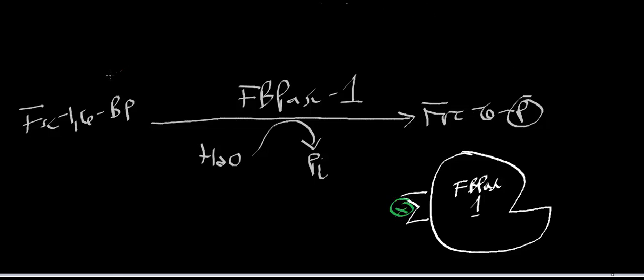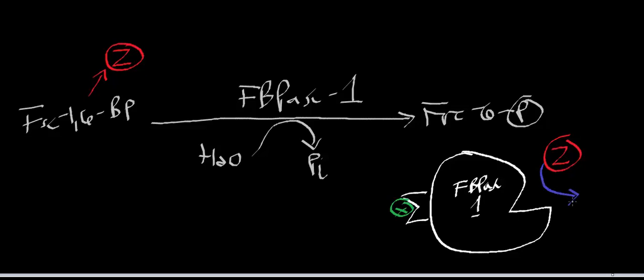Let me designate fructose 1,6-bisphosphate as this. Because normally, fructose bisphosphatase 1's only substrate is fructose 1,6-bisphosphate. But when fructose 2,6-bisphosphate binds in the allosteric site, the enzyme has a lowered affinity for fructose 1,6-bisphosphate. So as long as fructose 2,6-bisphosphate is bound, you can think of fructose 1,6-bisphosphate as sort of repelled — because it changes the conformation of fructose bisphosphatase 1 enough to lower its affinity.